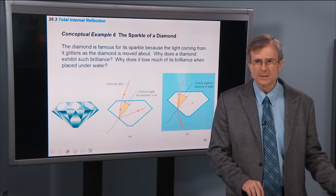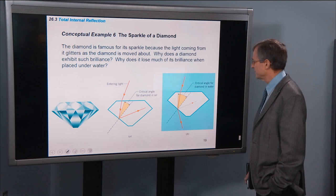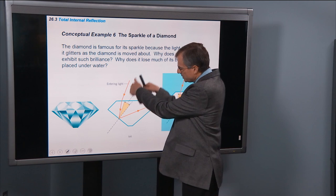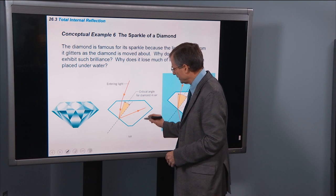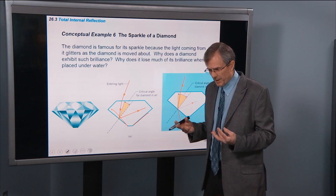That's what this slide is all about. The diamond is famous for its sparkle because the light coming is moved about. Why does a diamond exhibit such brilliance? Why does it lose much of its brilliance when placed under water? The idea is that a lot of the light coming in the top surface, top facets of the diamond, get reflected and totally internally reflected by these two walls of the diamond. And that causes the light to reflect internally and then come back out the top, giving it its dazzle.